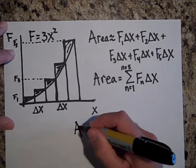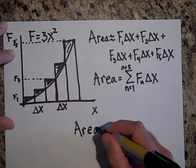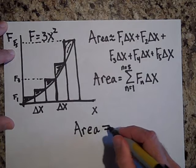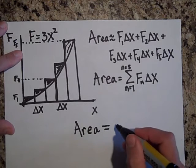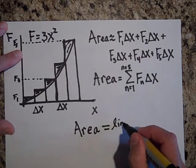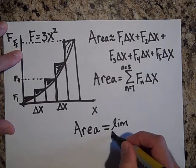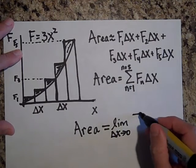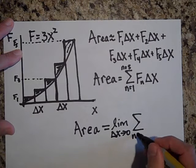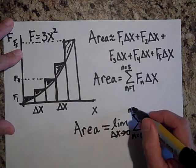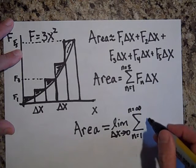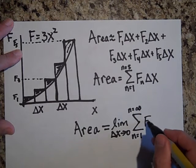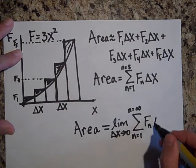When you do that, that gives you not an approximation but it's exactly right. So area is equal to the limit as delta x goes to zero of the sum from n equals one to n equals infinity of fn times delta x.